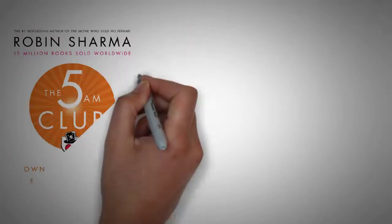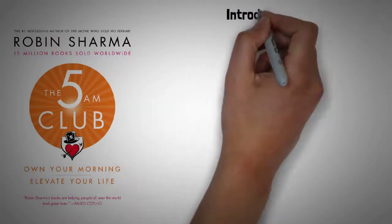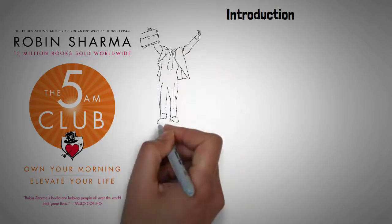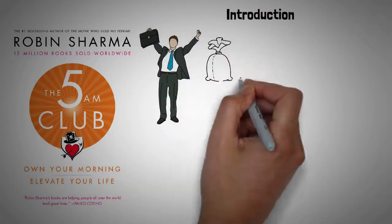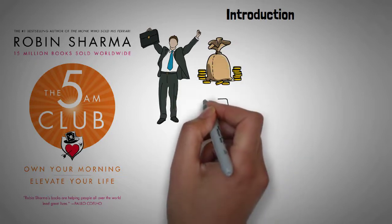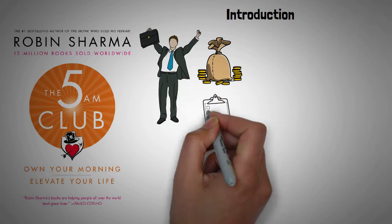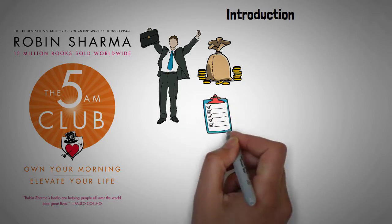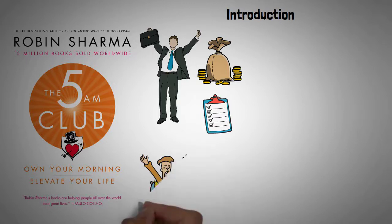Summary of The 5 AM Club by Robin Sharma. Introduction: What's the secret to becoming a billionaire? There must be one, because if we all knew how to get there, surely everybody would have a billion dollars by now. But the truth is there is no singular secret to success. In the case of one very successful billionaire, that secret was starting his day at 5 AM.